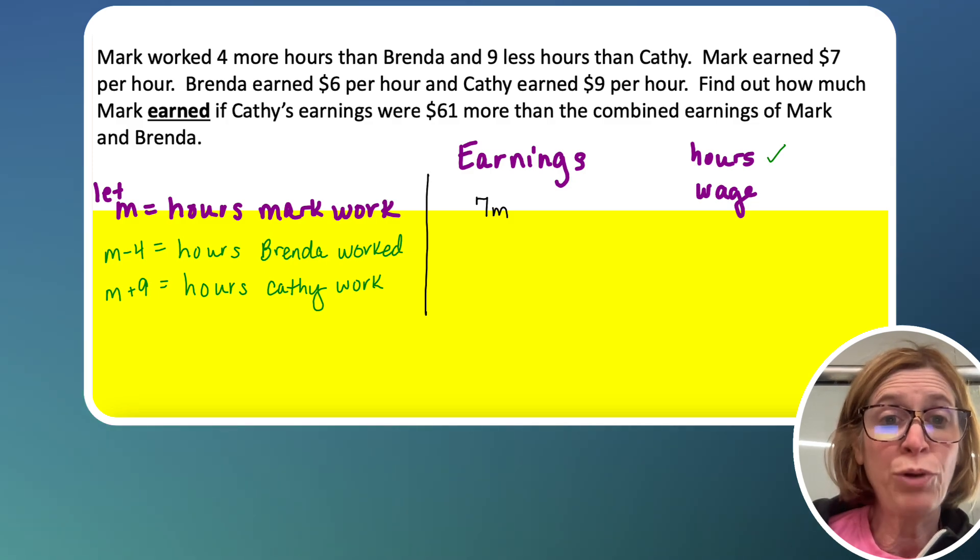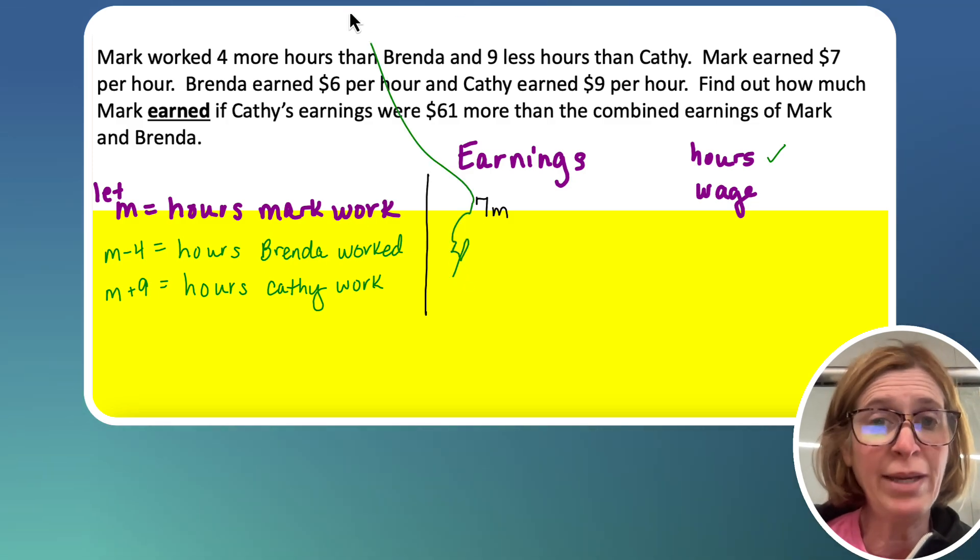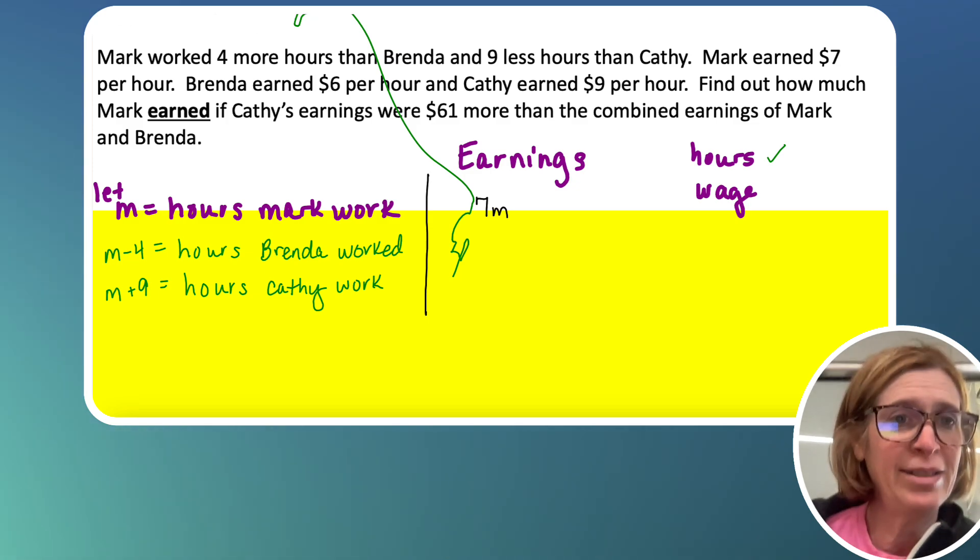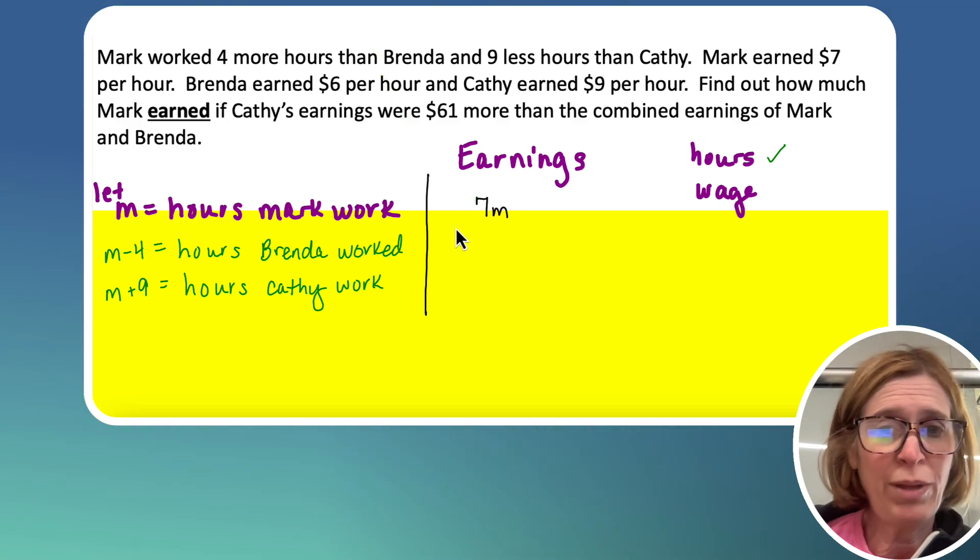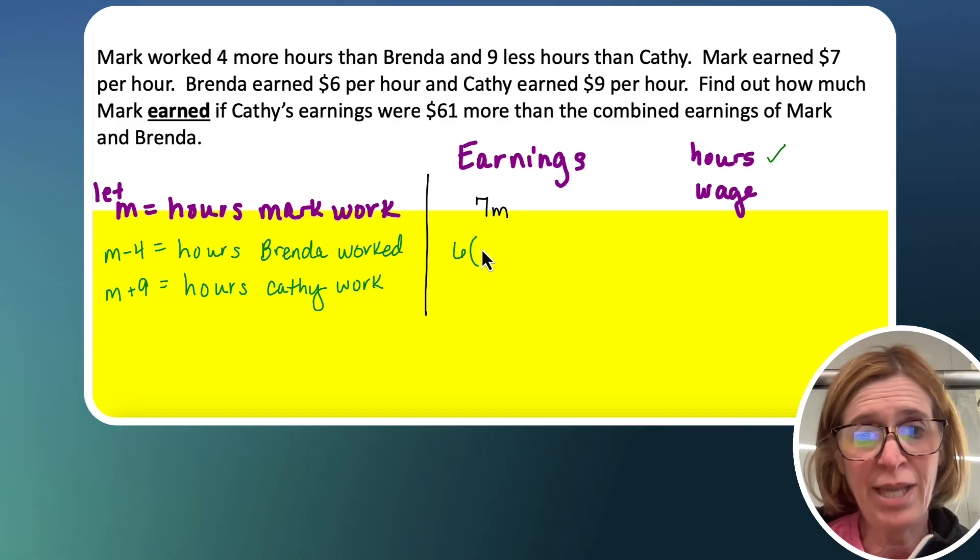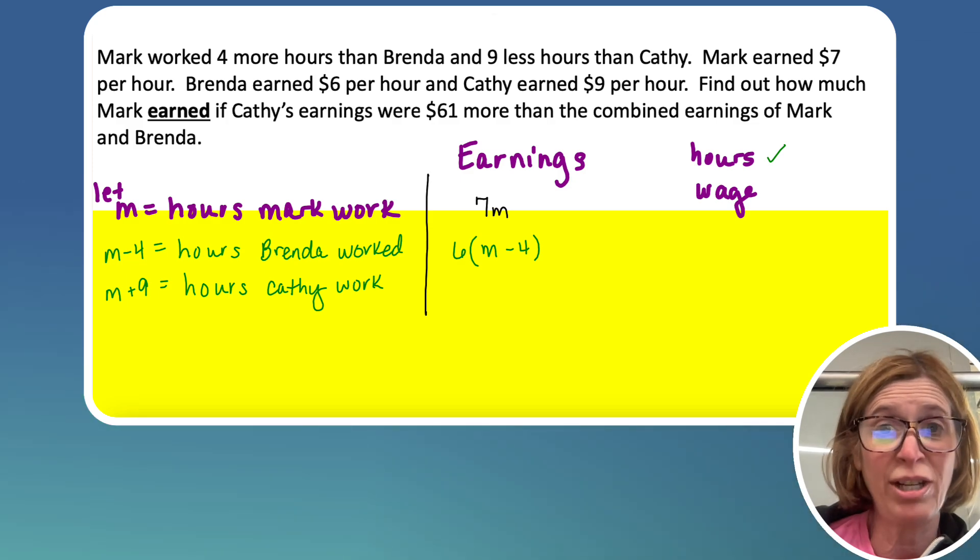Alright, for Brenda, she earned six dollars per hour. So I have to multiply six times M minus four. Now, I need to put it in parentheses, because M minus four is an expression with addition and subtraction.